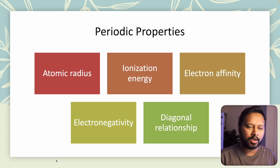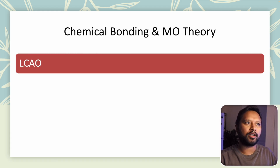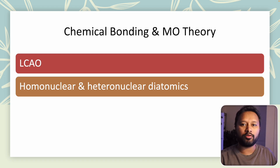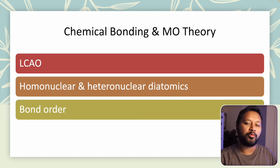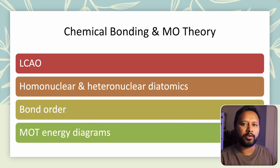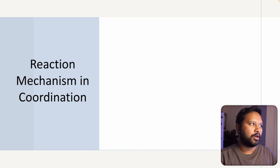Chemical bonding and molecular orbital theory covers diatomic molecules — linear combination of atomic orbitals (LCAO), homonuclear and heteronuclear diatomic molecules, the arrangement of bonding and antibonding orbitals, bond order calculations, and how bond order affects bond strength and bond length. The molecular orbital energy diagrams of both homonuclear and heteronuclear diatomic molecules should be well understood.